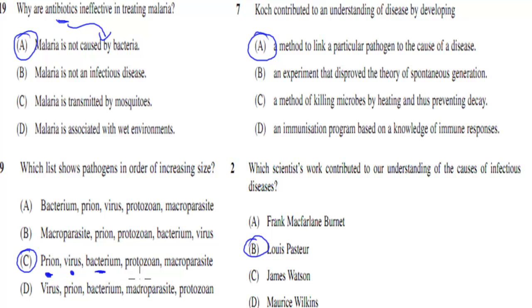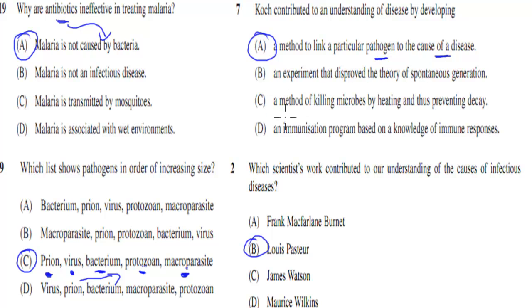Bacterium is bigger — it's a cell but a prokaryote. Protozoa is the next biggest; it's eukaryotic and unicellular, about 10 micrometres. Macroparasites can be quite big, even visible to the eye, so that's obviously the biggest. For the Koch's postulates question, the answer was A — Koch developed a method to link specific pathogens to specific diseases. And the scientist for the infectious disease question was B — Louis Pasteur.